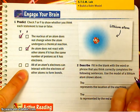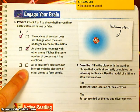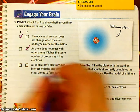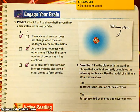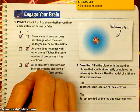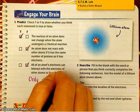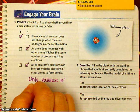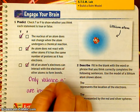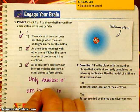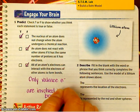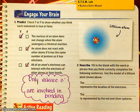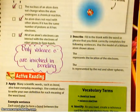All right, next one. All of an atom's electrons can interact with the electrons of other atoms to form bonds. False. What are the only electrons that are involved in chemical bonding? Only valence electrons are involved in bonding. So nothing in the nucleus is involved in a chemical bond, and of the electrons, it's just the valence electrons.